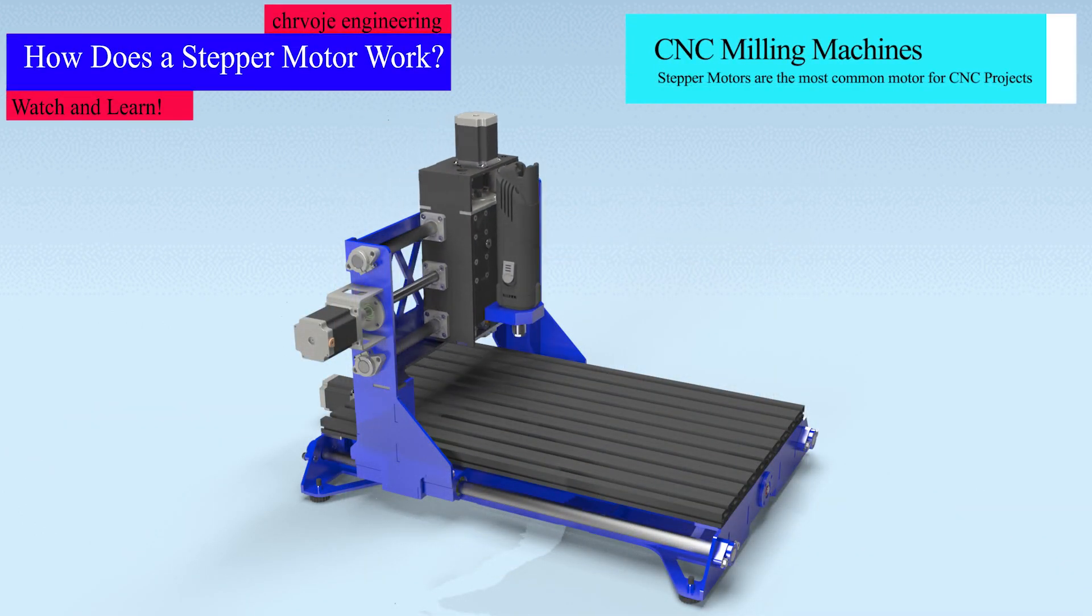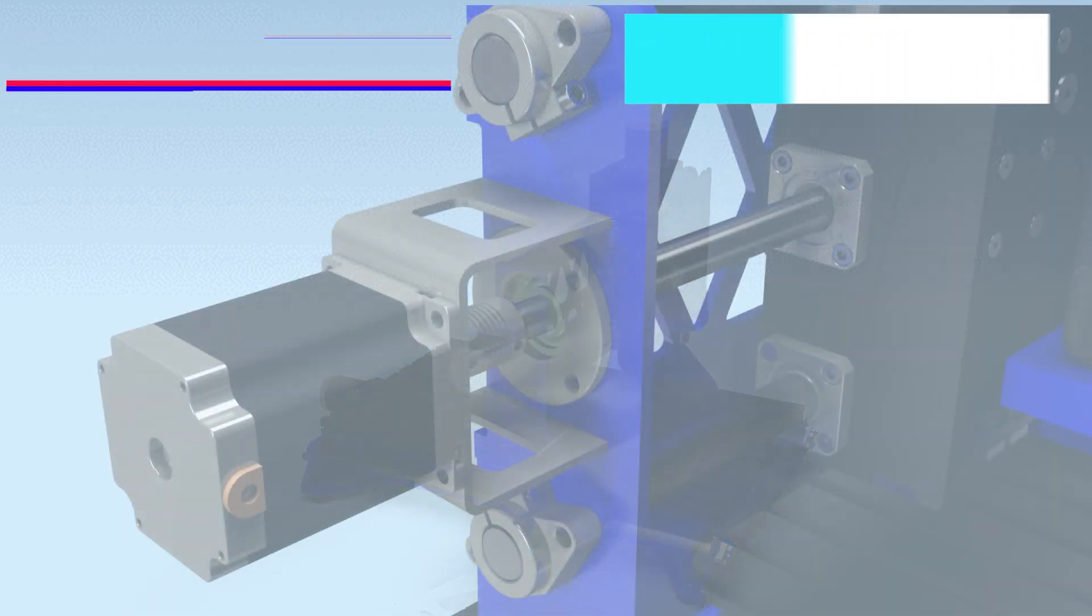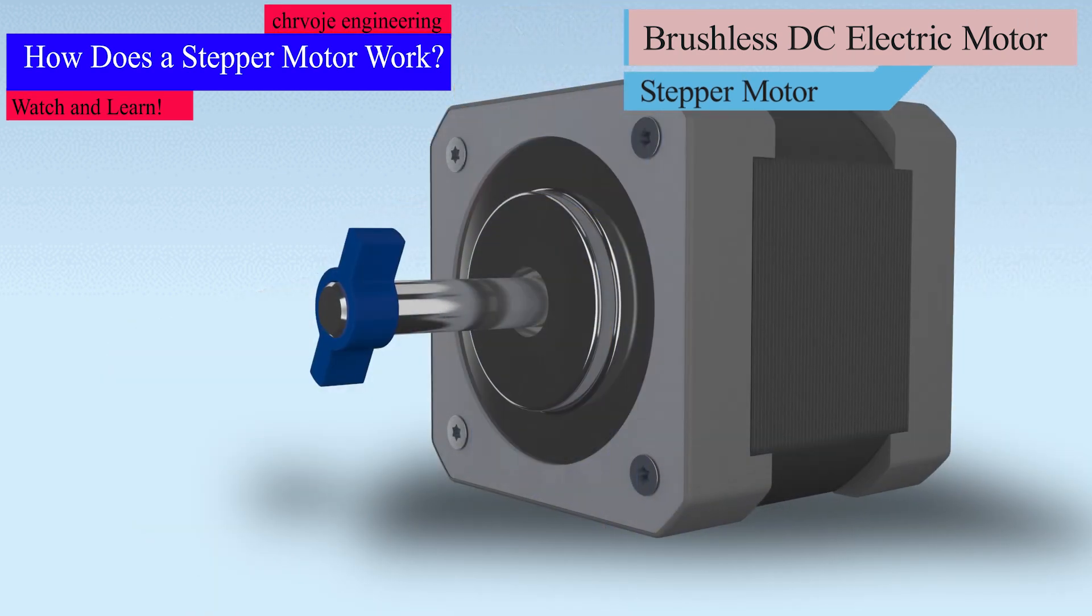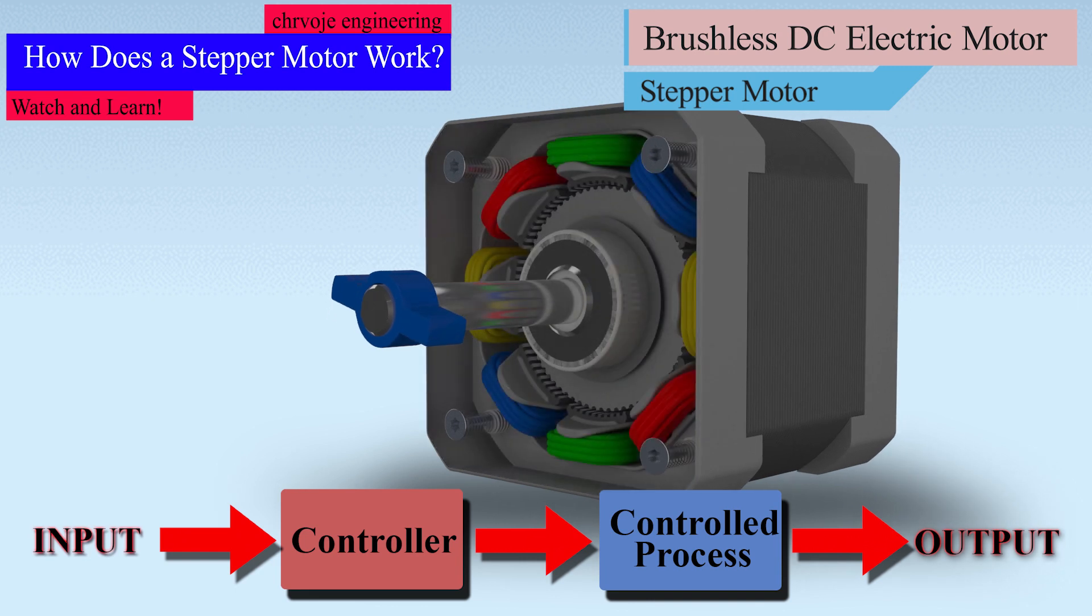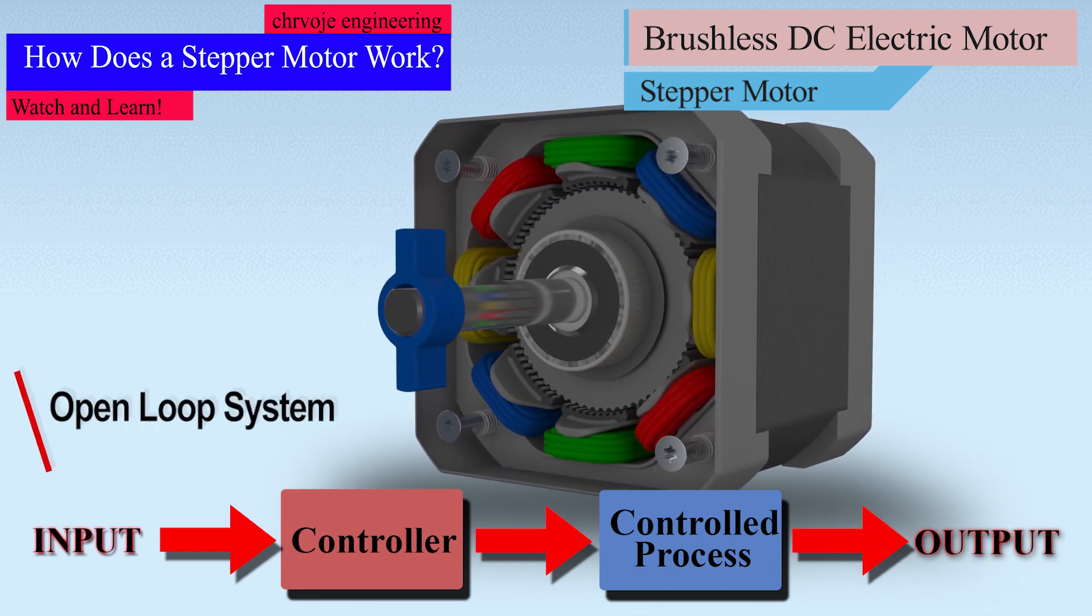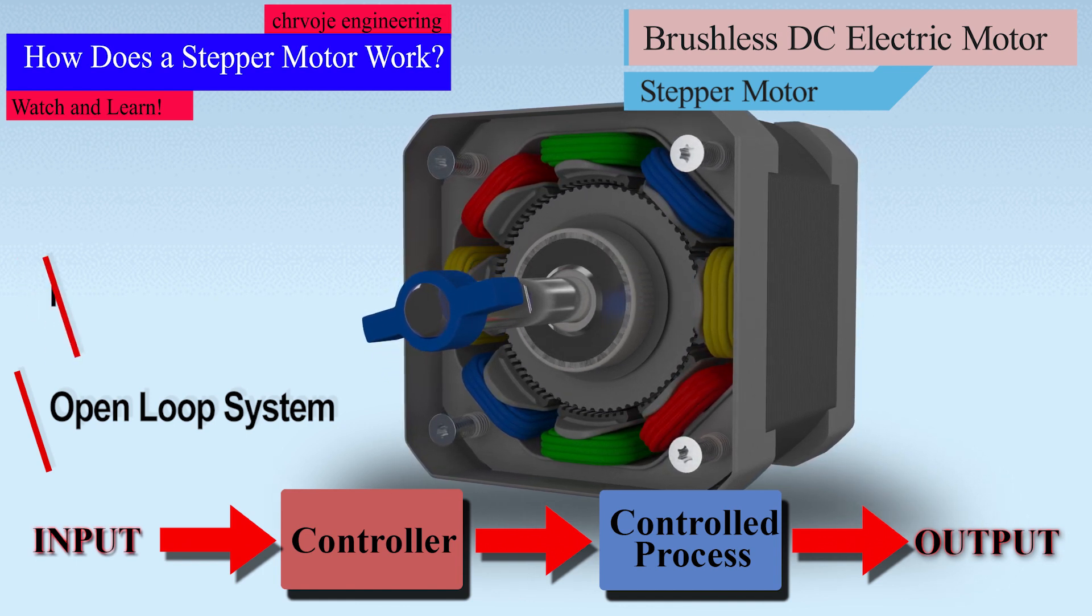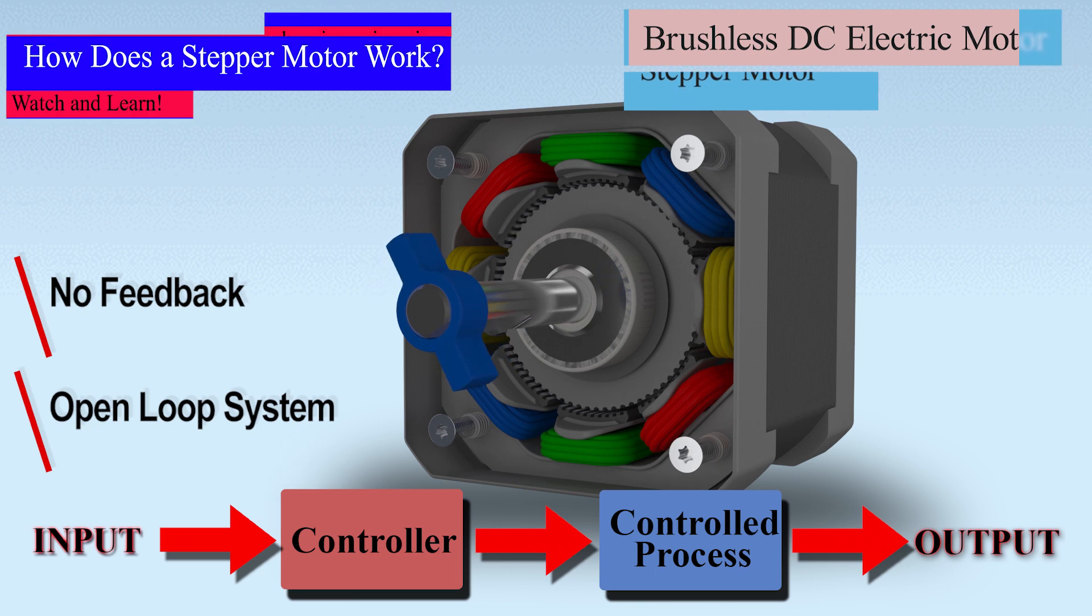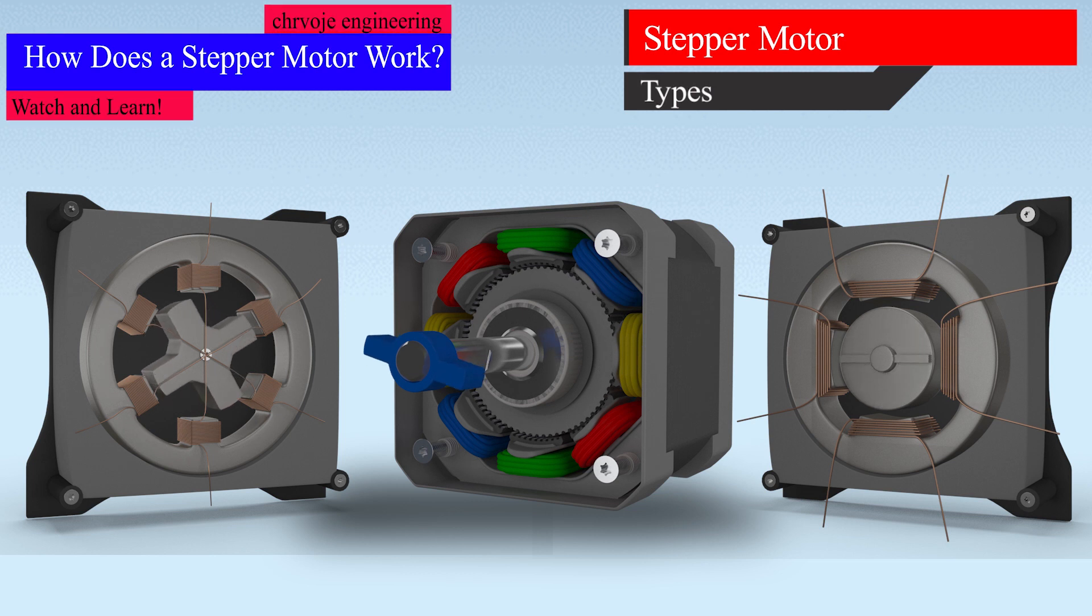It's all because of the stepper motor. This brushless electric motor divides a full rotation into a number of equal steps. They are typically digitally controlled as part of an open loop system for use in holding or precision positioning applications. The motor's position can be controlled accurately without any feedback mechanism as long as the motor is carefully sized to the application.